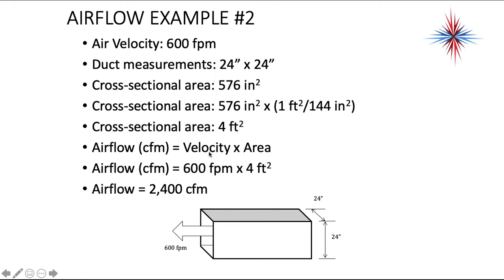We have an airflow CFM of velocity times the area. So we have 600 feet per minute times 4 square feet. So our airflow is 2,400 CFM in this example. Again, we measure the velocity, we measure the duct work, we calculate what our airflow is.